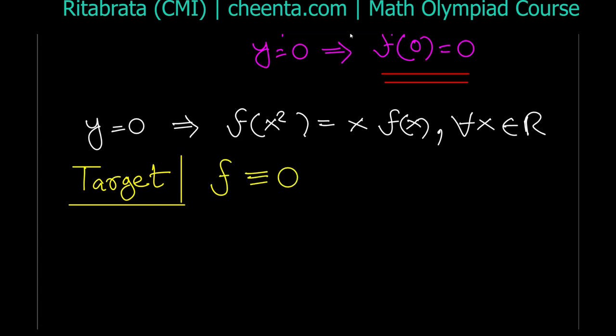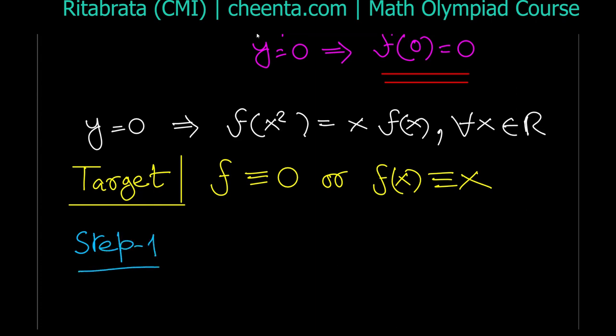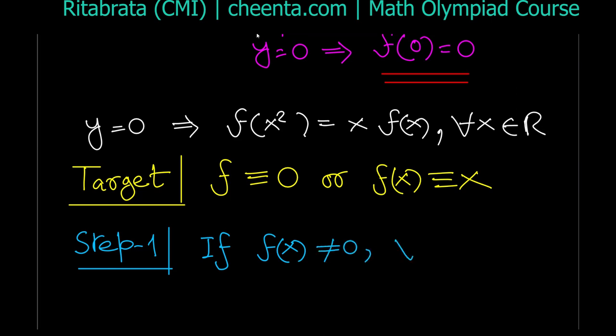Our target is to show f is identically 0 or f is identically x. We already know f(0) = 0. As a first step, we'll show that if for all x ≠ 0, f(x) ≠ 0 — meaning we're discarding the possibility that f is identically 0 — then f must be identically equal to x.